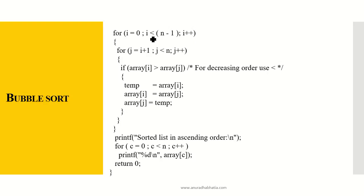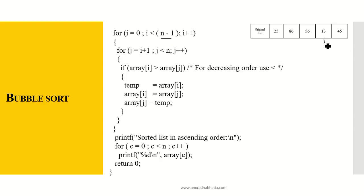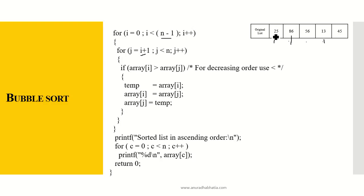The outer loop goes from i equals 0 to i less than n minus 1 because the last element never needs to compare itself with the final position — i increments up to n minus 1 (values 0, 1, 2, 3 for five elements). The inner loop runs j from i plus 1 to j less than n. The j starting at i plus 1 is important: if the i-th element is at 25, we start comparing from the next element, not from i itself. The inner loop always starts at i plus 1 in bubble sort.